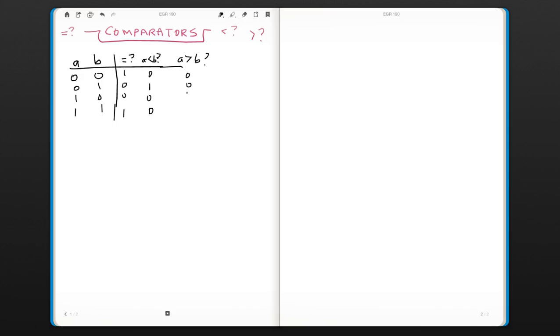And for a bigger than b, this would be our truth table. So now let's think about a six-bit number, two six-bit numbers, and see how we would approach comparing these two numbers.